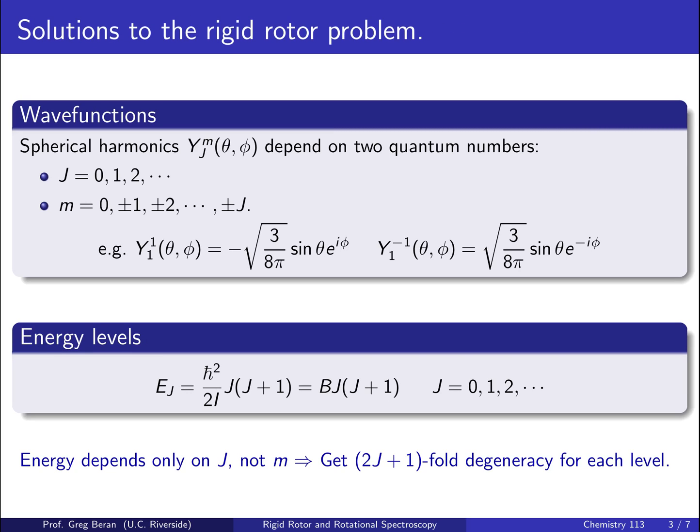When we solve the rigid rotor, we end up with a series of wave functions which are known as the spherical harmonics. These wave functions depend on the angle theta and phi, and they have two quantum numbers, j and m. j ranges from 0, 1, 2, etc., while m ranges from 0, plus or minus 1, plus or minus 2, all the way up to plus or minus whatever the current value of j is.